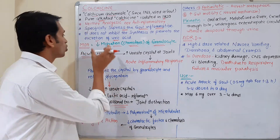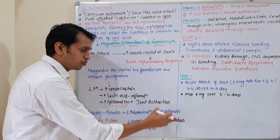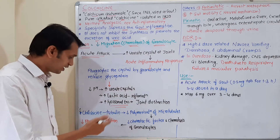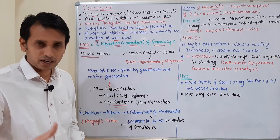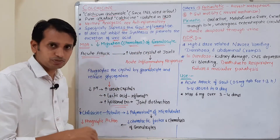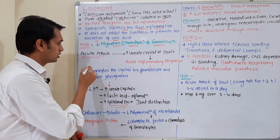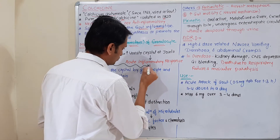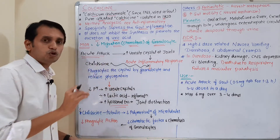The role of colchicine is to bind with the tubulin protein of the microtubules and inhibit the polymerization of microtubules. This further inhibits the chemotaxis process of granulocytes and decreases their phagocytic action and further consequences. So ultimately colchicine binds tubulin in WBCs and granulocytes to inhibit their migration — that is the main pathway.